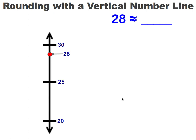Now when we look at it, we can tell that 28 is a lot closer to 30 than it is to 20. So 28 when rounded to the nearest 10 would be 30.